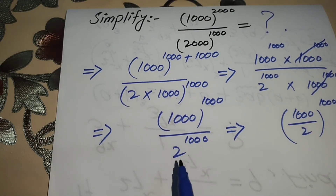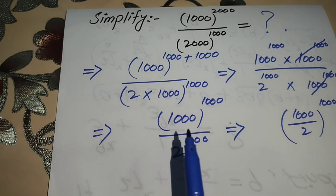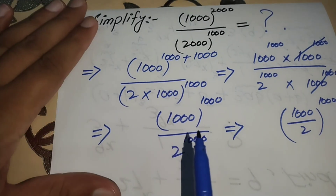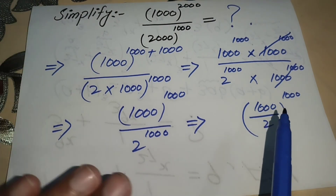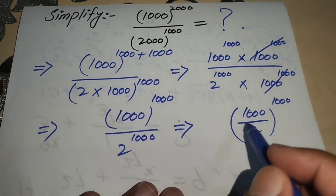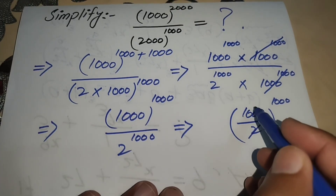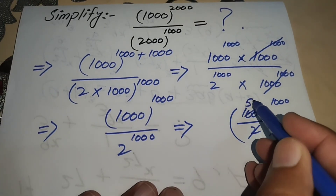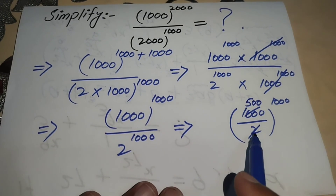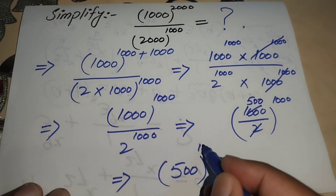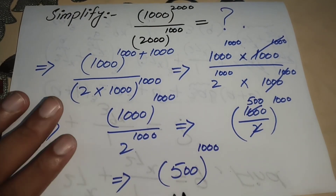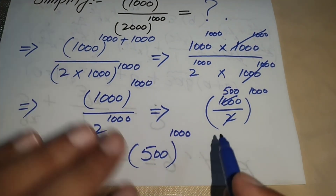We combine the powers to write the expression as (1000/2)^1000. After simplification, 1000 divided by 2 equals 500, so our final answer is 500 to the power 1000.